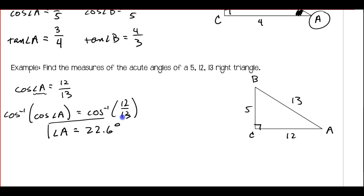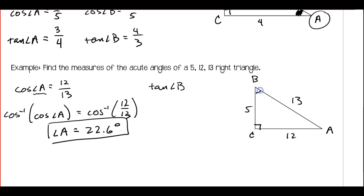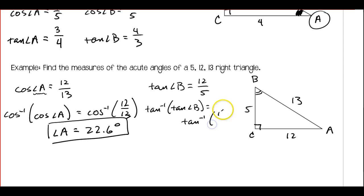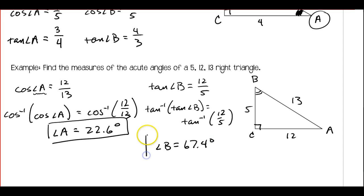We still have to find angle B. You can use any trig function you want — I'm going to use tangent for no particular reason. The tangent of angle B, standing over here at angle B, is the opposite which is 12, over the adjacent which is 5. Taking the tan inverse of both sides, the tan inverse and the tan cancel out, and we're left with angle B is equal to 67.4 degrees. These two should add up to 90 because the three angles add up to 180 and we already have 90, so the rest has to be 90.